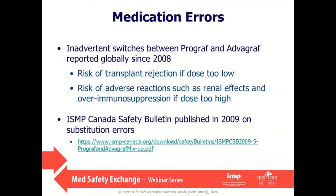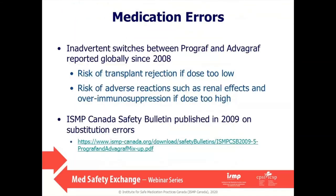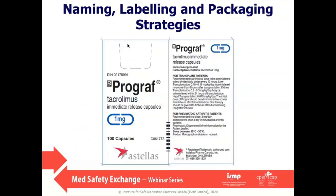Health Canada worked with the manufacturers of ProGraph and Advagraf to implement product naming, labeling, and packaging strategies to better differentiate the formulations. For ProGraph, 'immediate release' was added to the non-proprietary name wherever it appeared on labels and in the product monograph, so it now reads 'Tacrolimus immediate release capsules.' Dosage instructions for transplant patients to take the product every 12 hours were added to labels, and text alerting health professionals and consumers to the risk of inadvertent substitution was drafted in the product monograph. Generic products have also been instructed to adopt these same strategies.